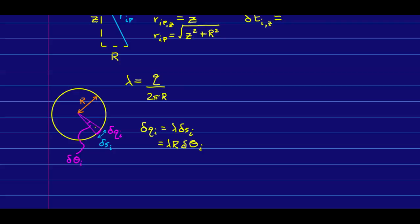The next thing we have to deal with is how to write our delta q_i. We want it in terms of something we can integrate over. Well, we know that the linear density of charge on this is going to be the charge over the circumference of the circle. So, that gives us this expression.